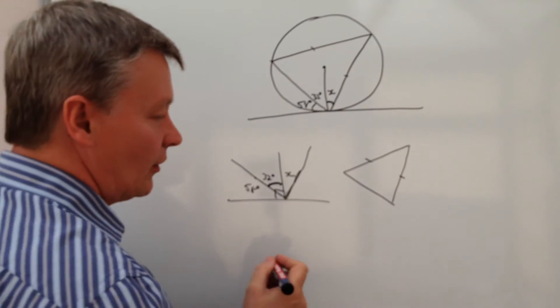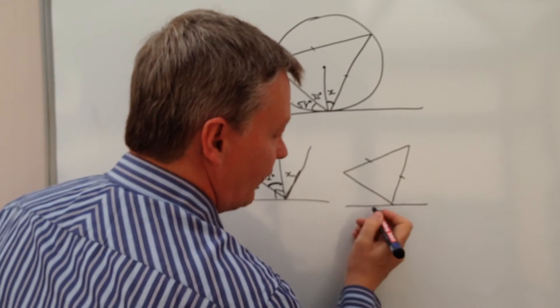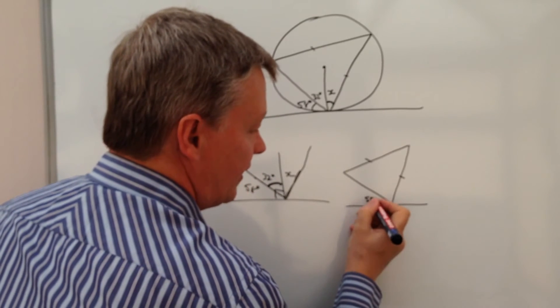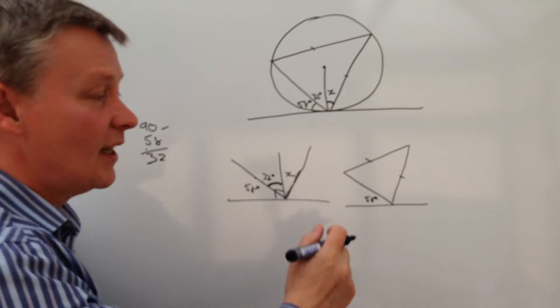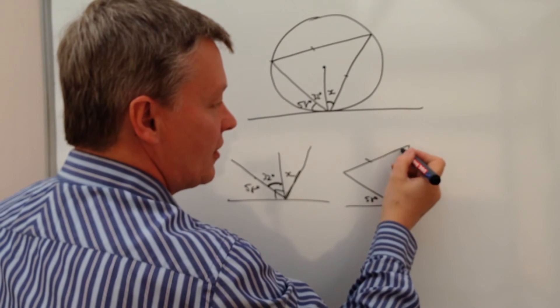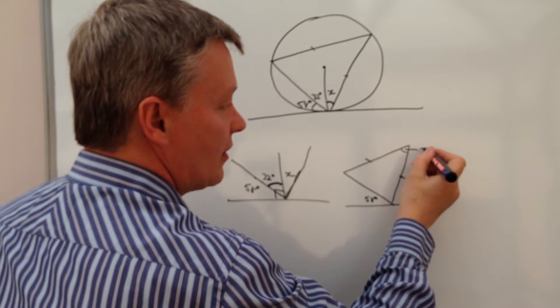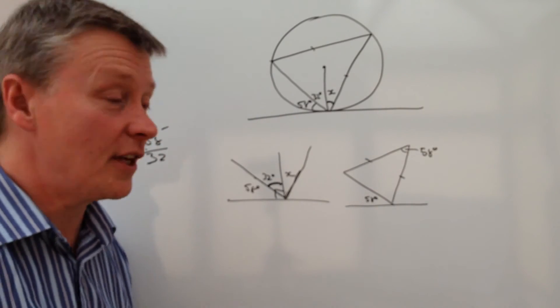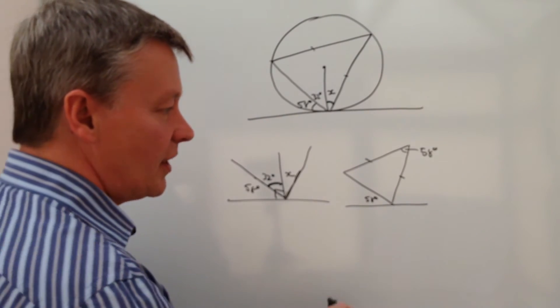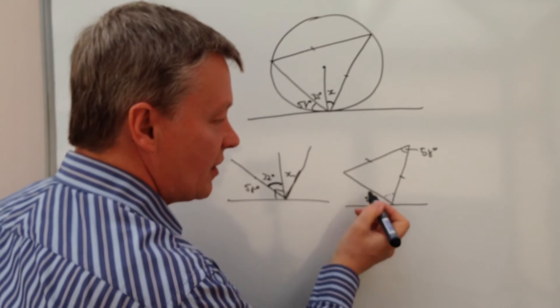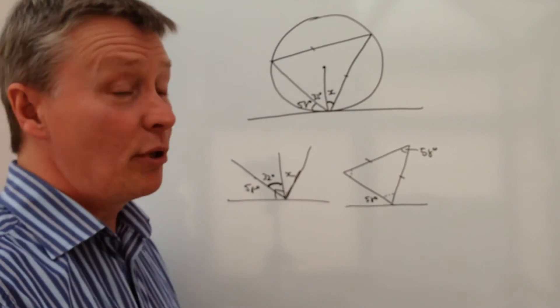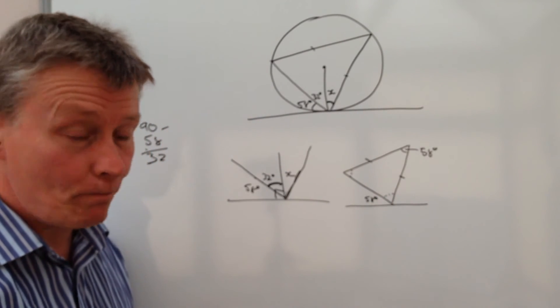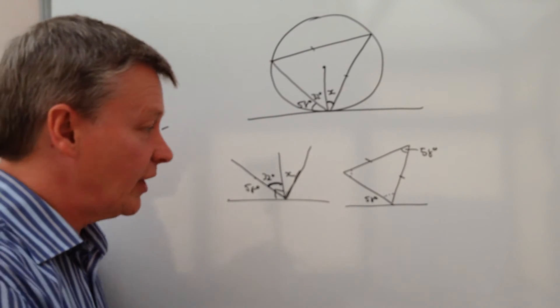We can use something called alternate segment theorem, where this is 58 degrees. And because this is 58, then where it touches the circumference, this is also 58 as well. Brilliant. So we're now in a position where we've got the ability to be able to work out this angle and this angle, because they're going to be the same, because it's an isosceles triangle.